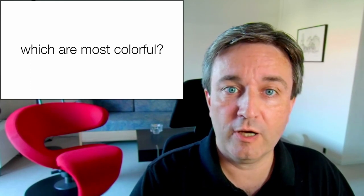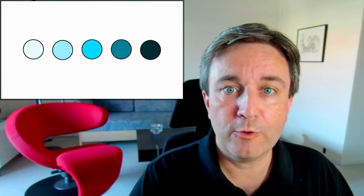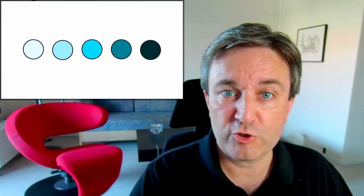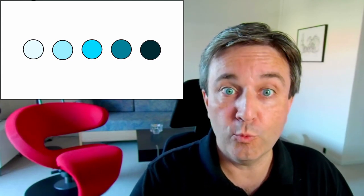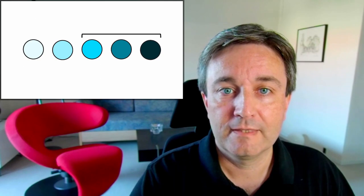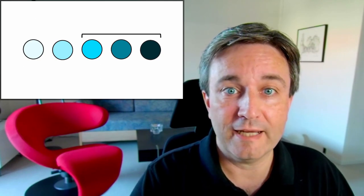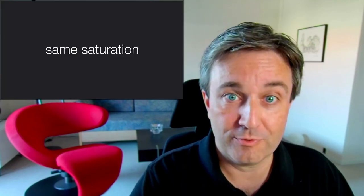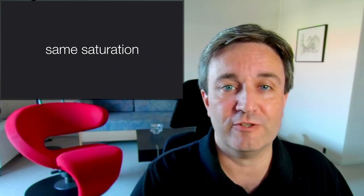Another question. Which are the most colorful? Looking at the same five circles, we can probably all agree that the most blue, the most strongly colorful circle, is the blue one in the middle. But according to HSV, the three on the right are all equally saturated. They have the same saturation value.